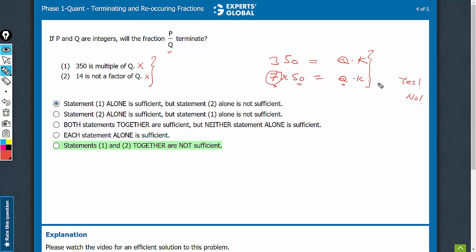On combining, yes and no, both are still possible. If Q is equal to 50 or one of the factors of 50, the answer would be yes. And if Q is not a multiple of 14, it does not mean that Q is not a multiple of 7.